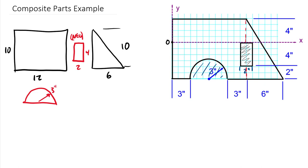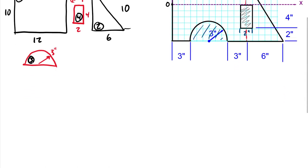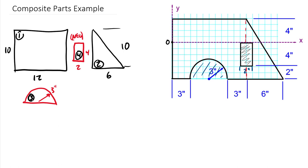There are four shapes total. Shape one is the overall rectangle, shape two is the right triangle — both positive. Shape three is the half-circle cutout (negative), and shape four is the rectangular cutout (negative). We'll organize these into a table, working line by line to find centroidal distances and areas. The given axes are centered at point O, so anything above the x-axis is positive y-bar and anything to the right is positive x-bar; below is negative y-bar.